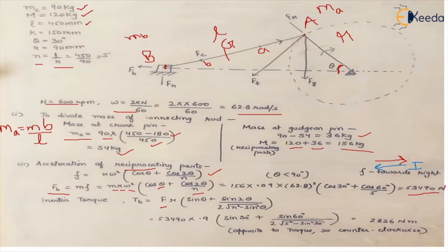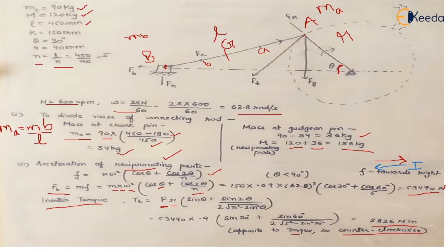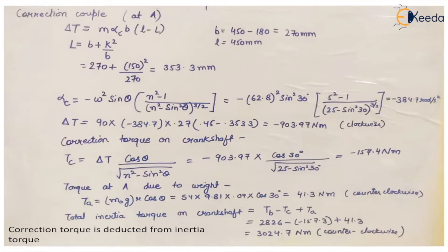The inertia torque equals F × r × (sin θ + sin 2θ / (2√(n² − sin²θ))). Substituting the inertia force of 53,490 N, crank length of 90 mm, and known values of theta and n, the inertia torque comes out to 2826 N·m. Since this is an inertia torque, its direction is opposite to the actual torque — that is, in the counter-clockwise direction, as the crank moves from inner dead center toward outer dead center.